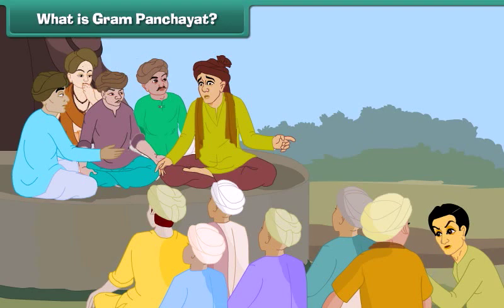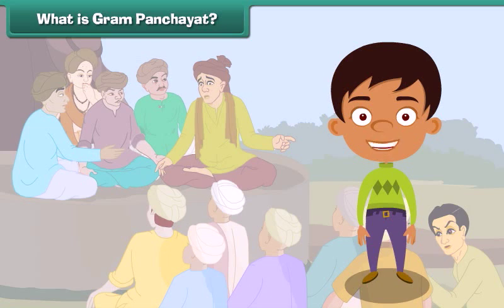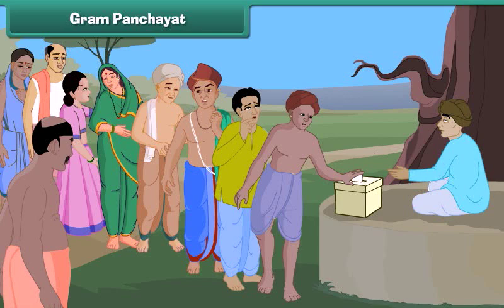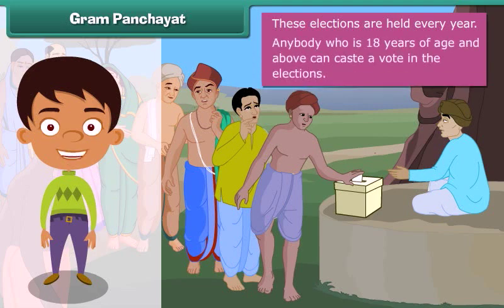Let us now understand the structure of the gram panchayat in detail. A gram panchayat is the local government of a village. It is formed by members elected by the villagers in gram panchayat elections. These elections are held every five years. Anybody who is 18 years of age and above can cast a vote in the elections.